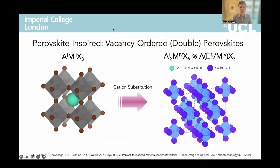Major research efforts have been devoted towards the discovery, design and development of so-called perovskite-inspired materials. We aim to replicate the exceptional optoelectronic performance of the lead-based perovskites while overcoming their infamous toxicity and stability pitfalls. One such material class which has emerged is that of vacancy-ordered perovskites, or vacancy-ordered double perovskites, with the chemical formula A2MX6.